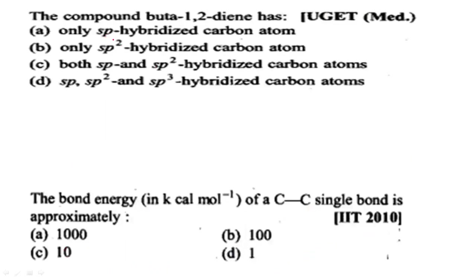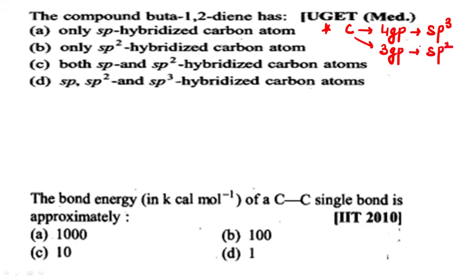The first question: the compound buta-1,2-diene has — only sp hybridized carbon atoms, only sp2 hybridized carbon atoms, both sp and sp2 hybridized carbon atoms, or sp, sp2 and sp3 hybridized carbon atoms? Whenever a hybridization question comes in organic chemistry, remember: if carbon is attached to four groups, that is sp3; if attached to three groups, that is sp2; if attached to only two groups, that is sp hybridized.